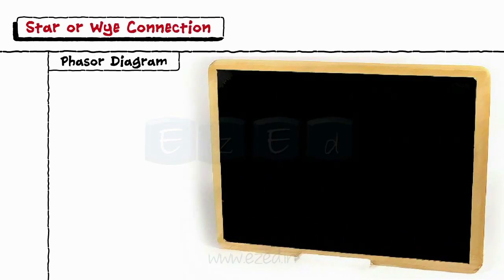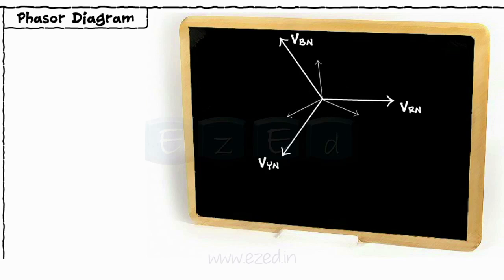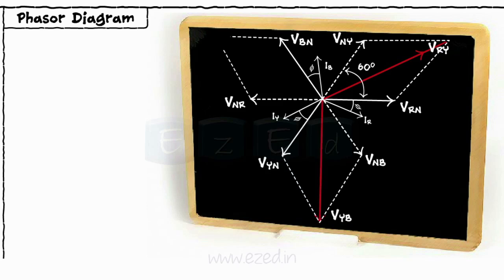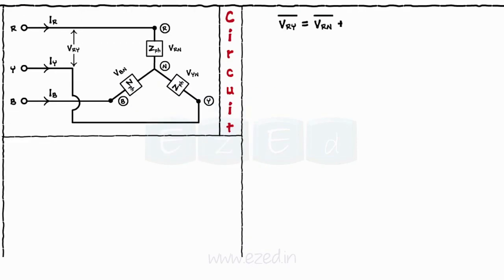Let's draw the phasor diagram for this system. Taking Vrn as a reference, the two phases Vyn and Vbn are drawn 120 degrees apart from each other. Being an inductive circuit, the current lags the voltage by an angle phi. The phasor VnR is drawn opposite to Vrn, the phasor Vny is drawn opposite to Vyn, and the phasor VnB is drawn opposite to Vbn. Completing the parallelogram of phasors Vrn and Vny, we get the resultant Vry which is the line voltage. Similarly, we get the other line voltages as Vyb and Vbr. It is clear from the circuit diagram that the line voltage Vry is the sum of the two phase voltages Vrn and Vny.